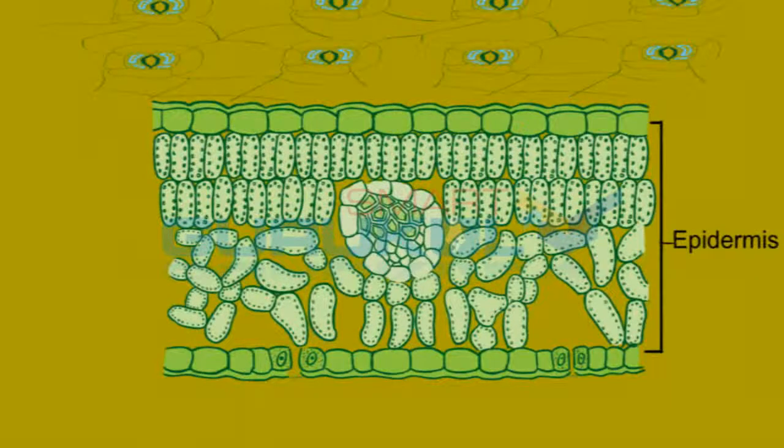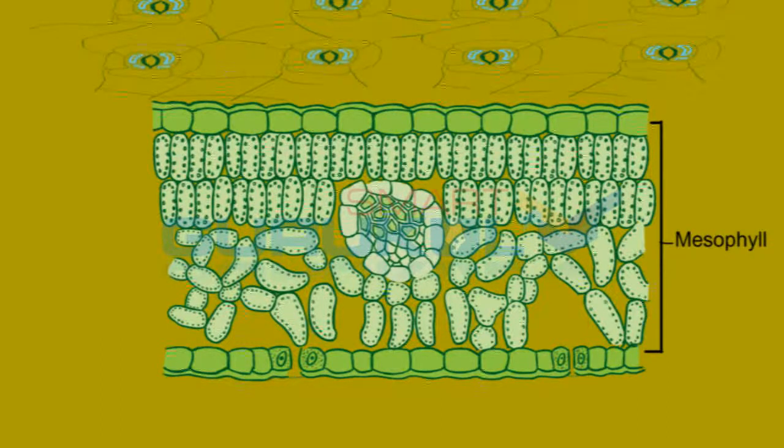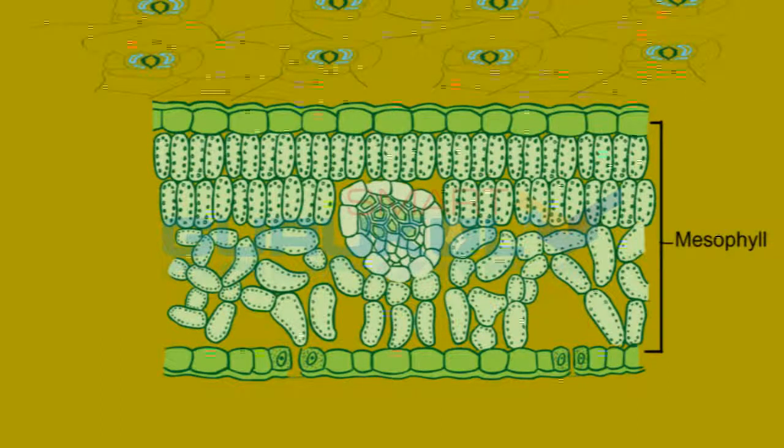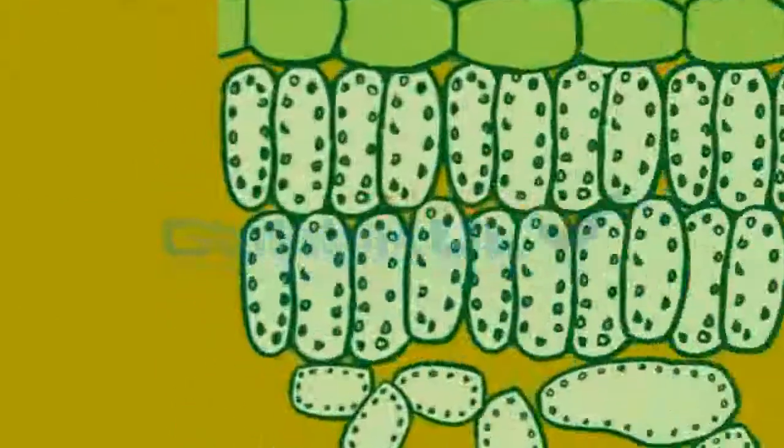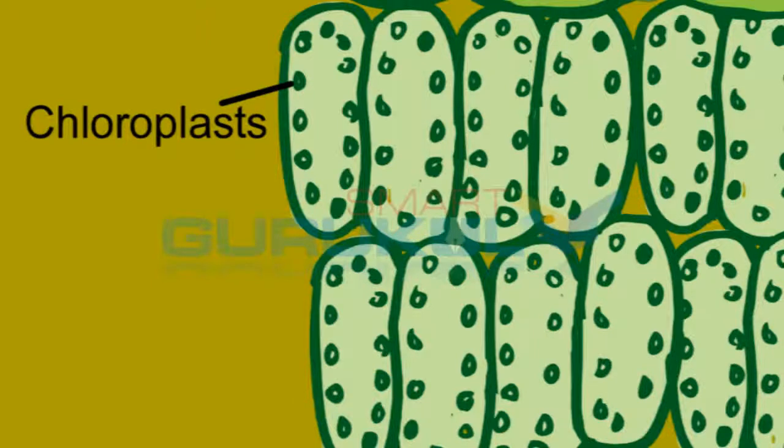The tissue enclosed between the two epidermal layers is called mesophyll. It is differentiated into palisade and spongy parenchyma. These mesophyll cells contain abundant chloroplasts.